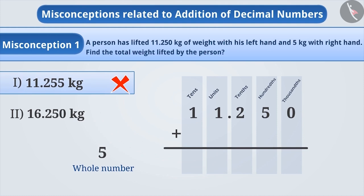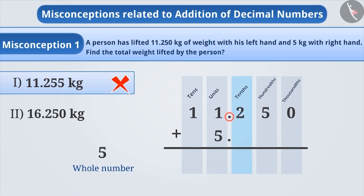The actual concept that needs to be learnt is that since 5 is a whole number, it has to be written to the left side of the decimal point. Since this number has only one digit, we will write 5 in the units place. Then, we will place the decimal point on the right side of 5 so that we can separate the tens place. Then, we write 0 in the tens place, hundreds place, and thousands place.